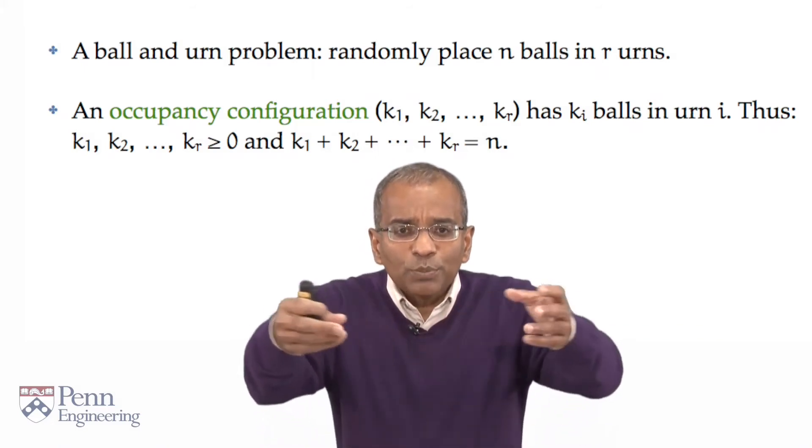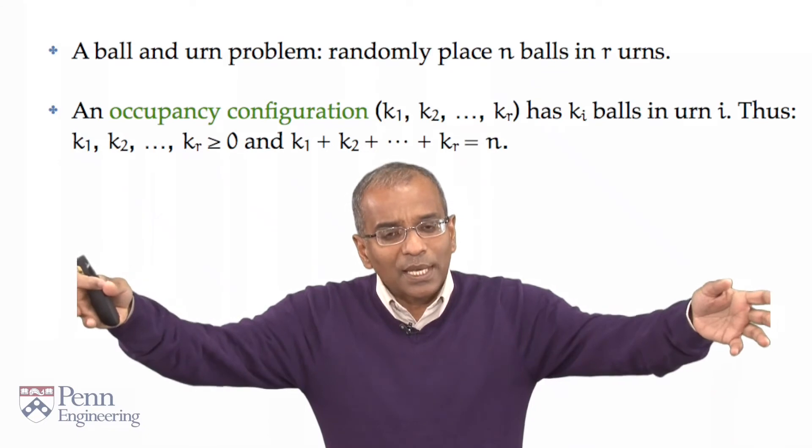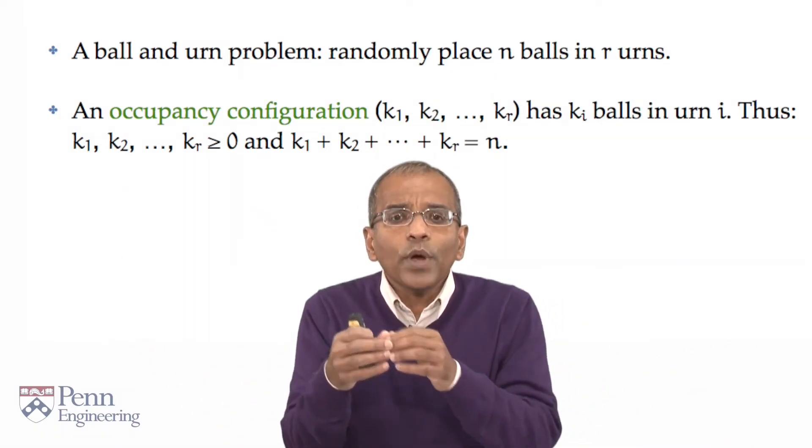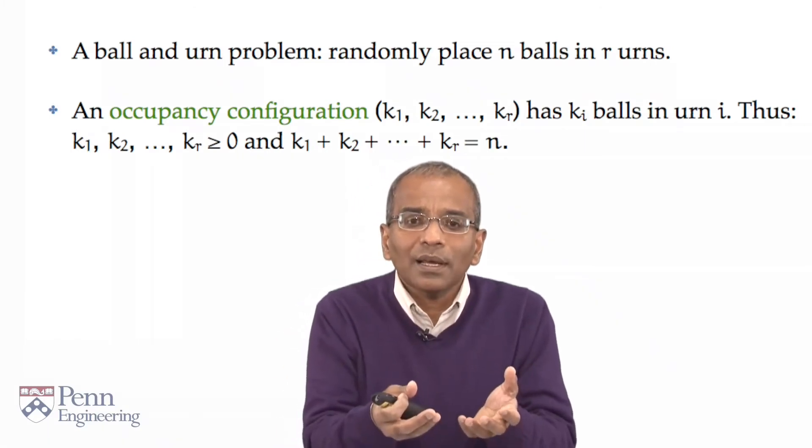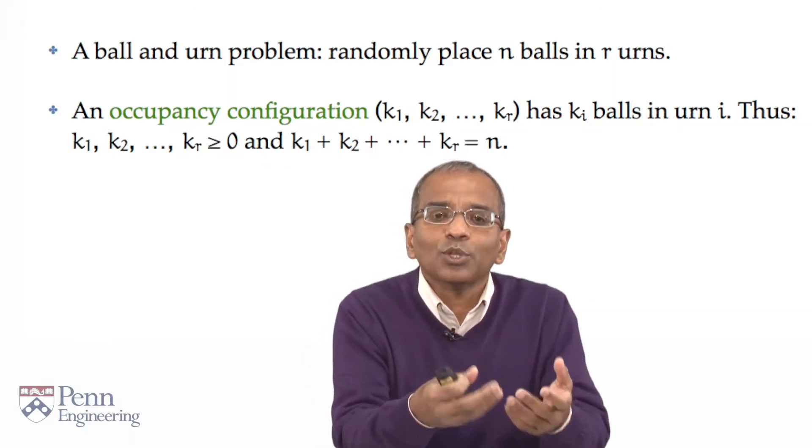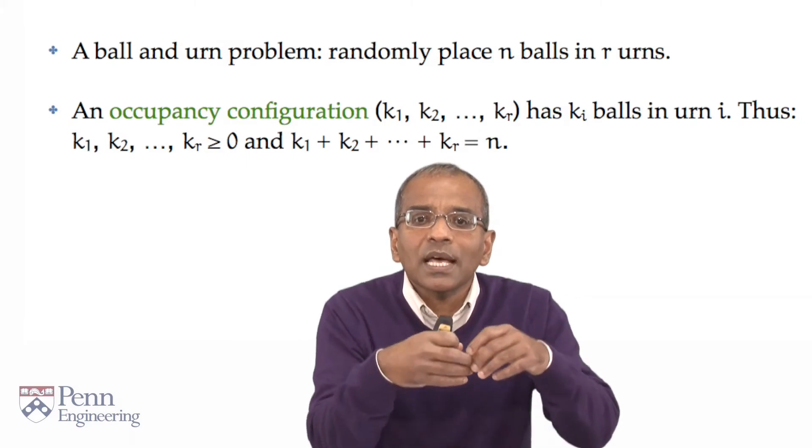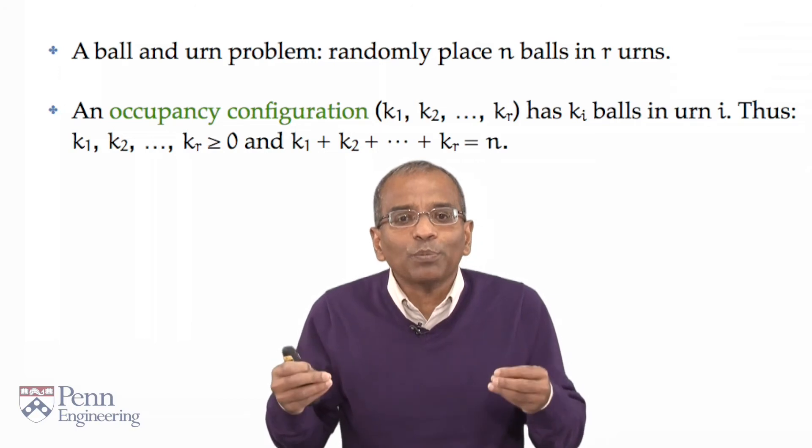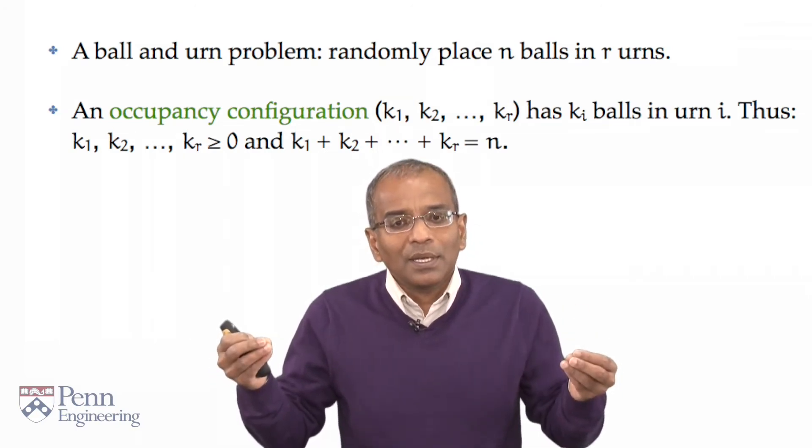The moment you distribute particles, balls, in these urns, now what is material, what is salient, is which urns are occupied and how many balls are in those urns - how many of those particles share a particular characteristic. This leads to the idea of an occupancy number.